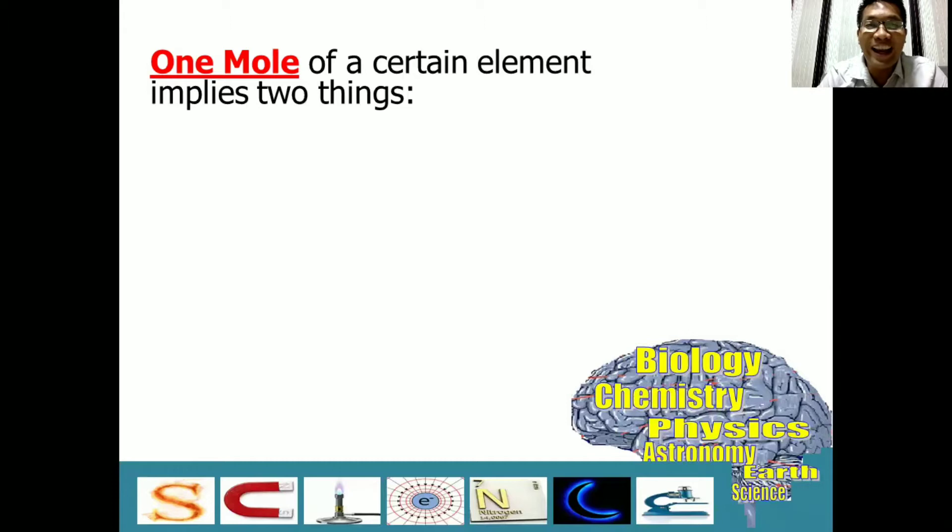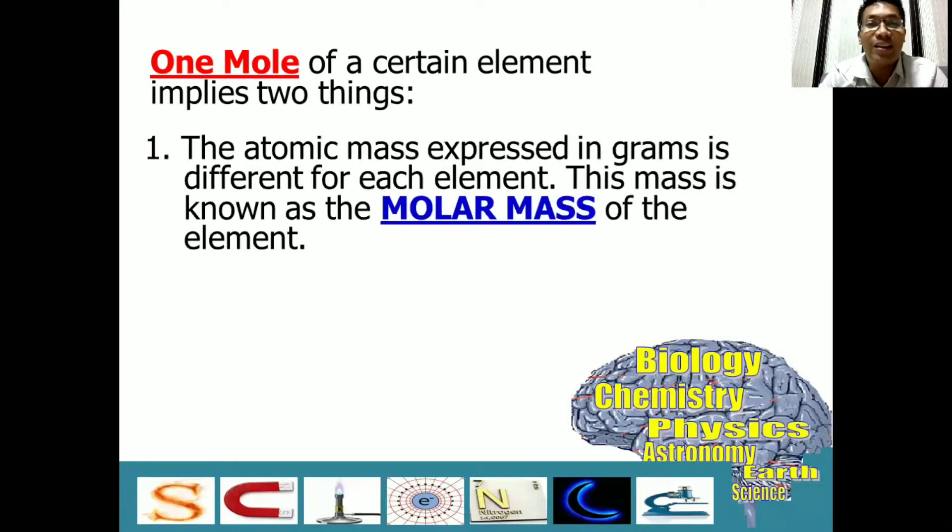One mole of a certain element implies two things. The first one, the atomic mass expressed in grams is different for each element. This is what we call molar mass. For example, one mole of carbon is equal to 12.01 grams. Sir, where did this 12.01 grams come from?